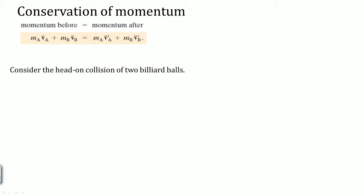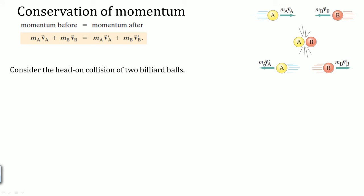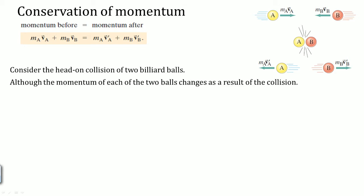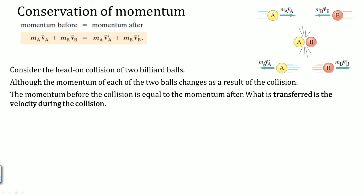We're going to consider the head-on collision of two billiard balls. Mass A is going with a momentum to the right, and mass B has a momentum going to the left. They collide, then they bounce back. Although the momentum of each of the two balls changes as a result of the collision, the momentum before the collision is equal to the momentum after. What is transferred is actually the velocity during the collision.